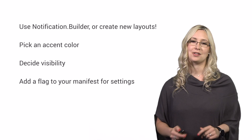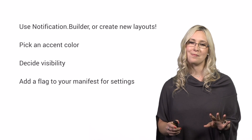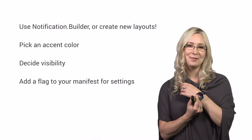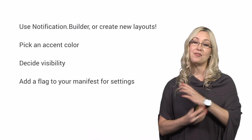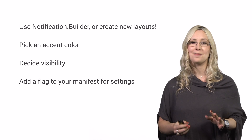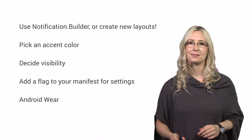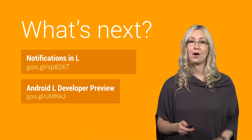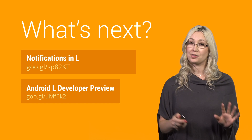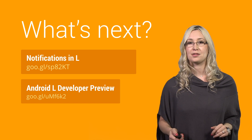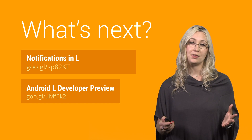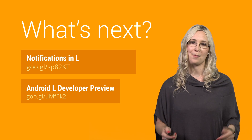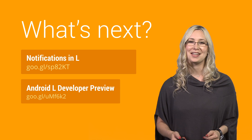And if you don't have a notification settings activity, go make one. Finally, if you have notifications, your app is already on Android Wear today, so make sure it's working the way that you want. If you don't have a watch yet, use the emulator. You can get started today with all of these new features by downloading the Android L developer preview. Check out the docs on notifications on developer.android.com. Thanks for watching.